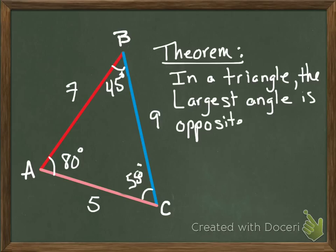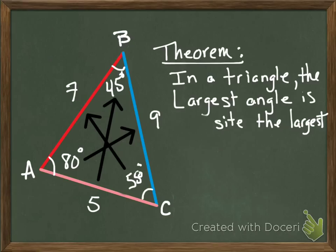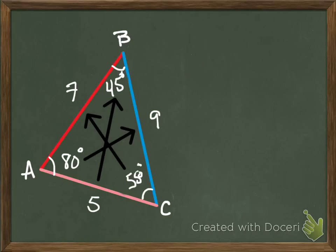So here's the theorem: in a triangle the largest angle is opposite the largest side. That's all there is to it. And so here's a real basic drawing of it, I just kind of labeled it to show you with arrows how it goes.